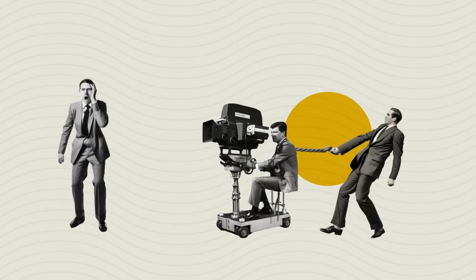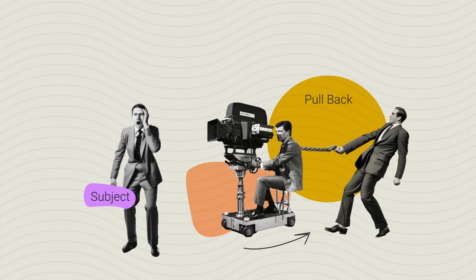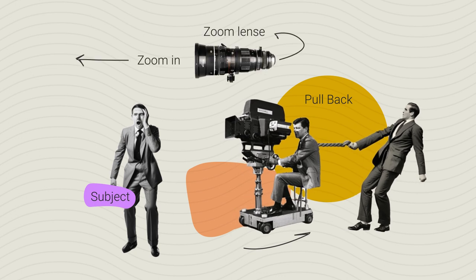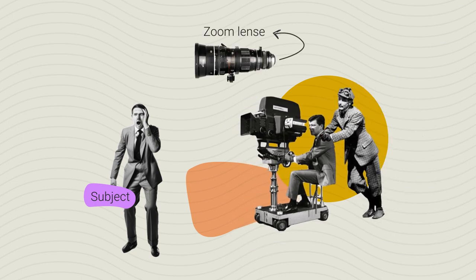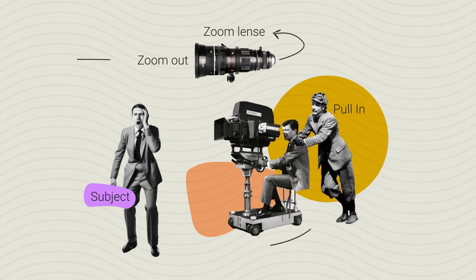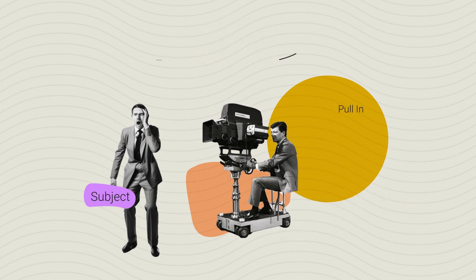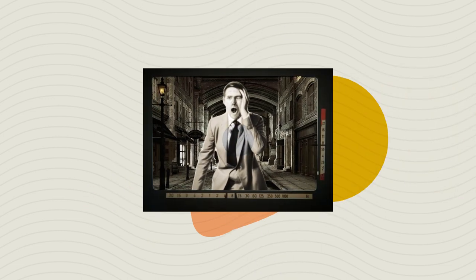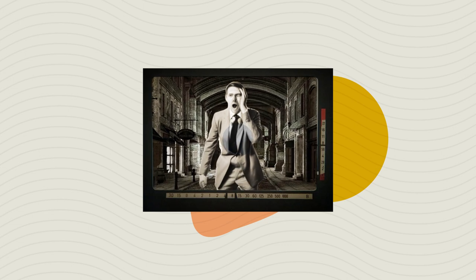The vertigo effect is an in-camera effect that distorts perspective and creates disorientation. The classic way to create this effect is to pull the camera away from the subject while zooming in with the lens. You can also pull the camera closer and zoom the lens out. During the zoom there is a continuous perspective distortion — the background appears to change in size relative to the subject. That perspective change without a corresponding size change in the subject leads to a very strong emotional impact.